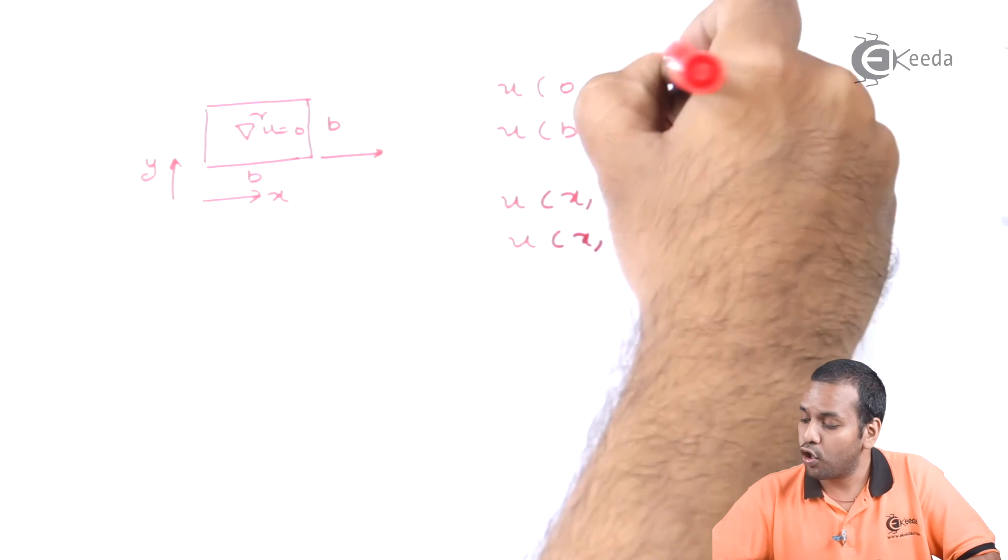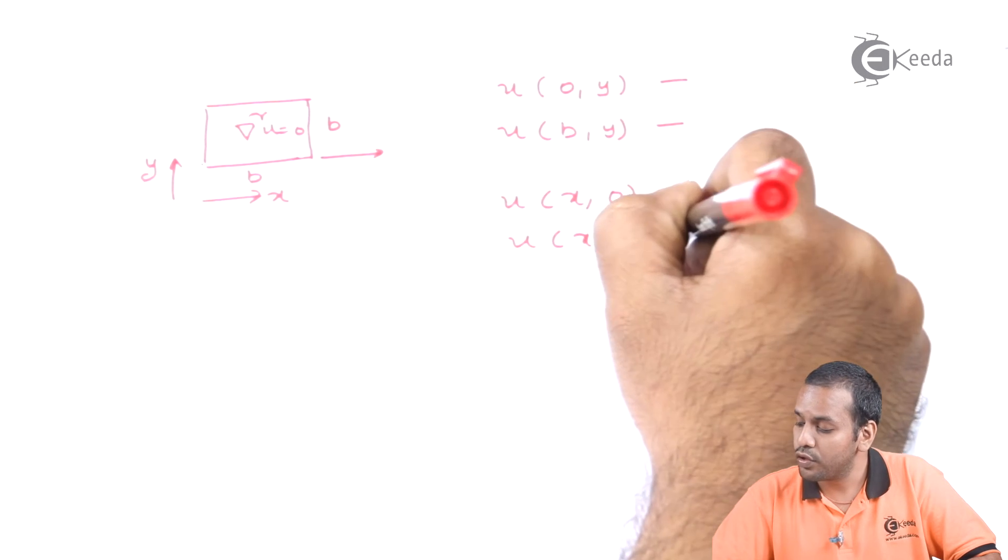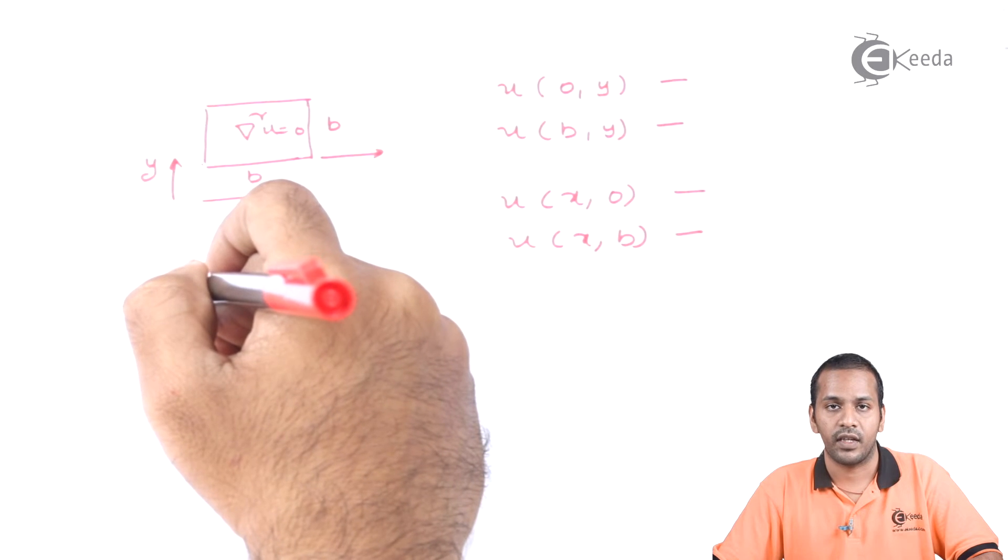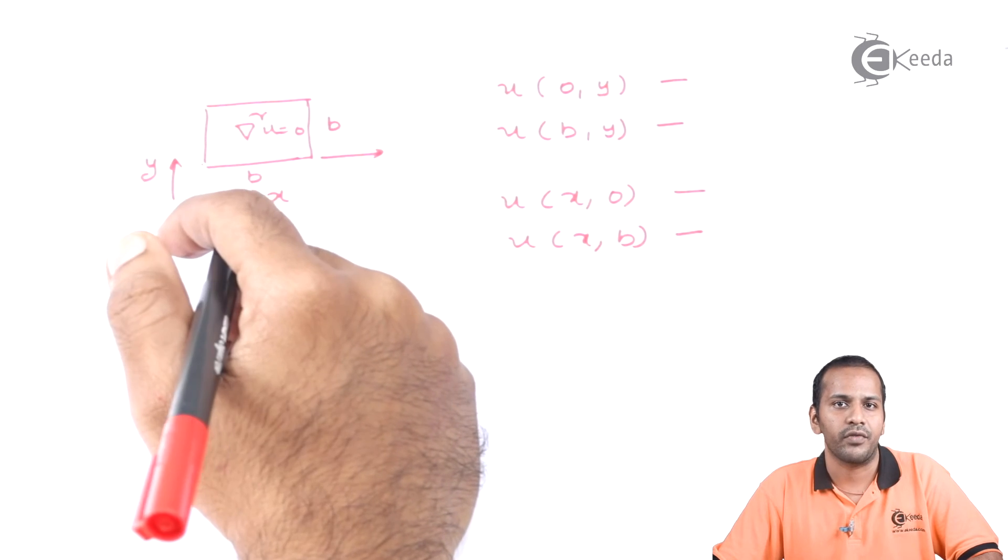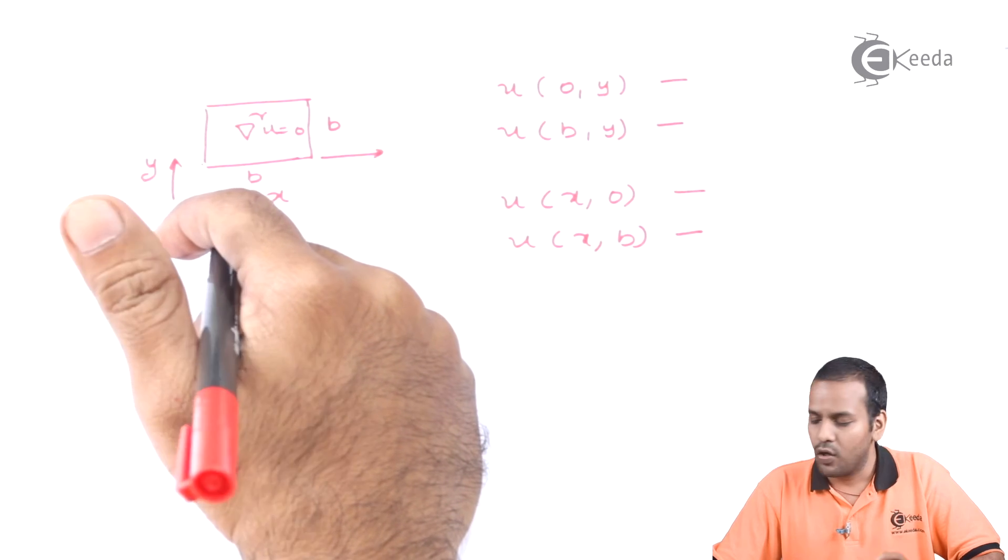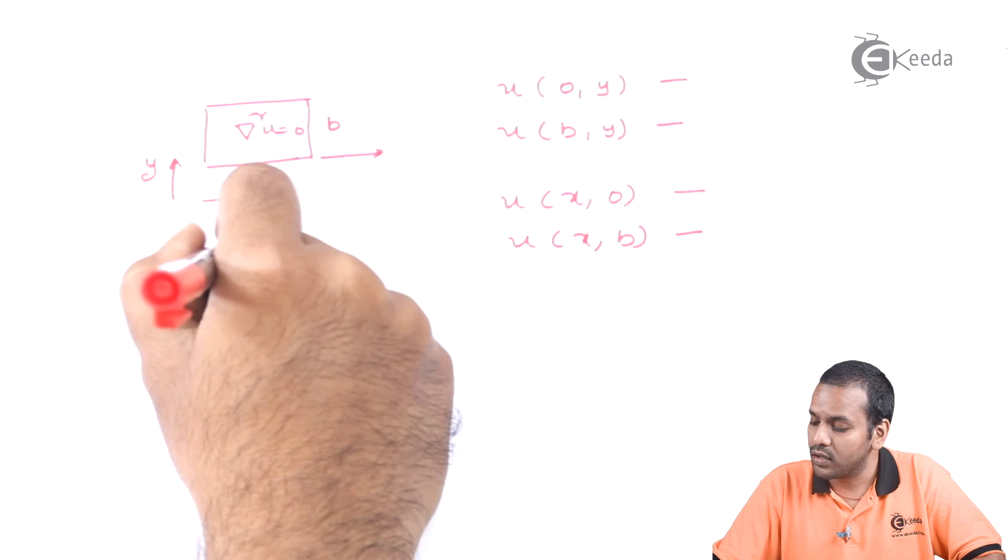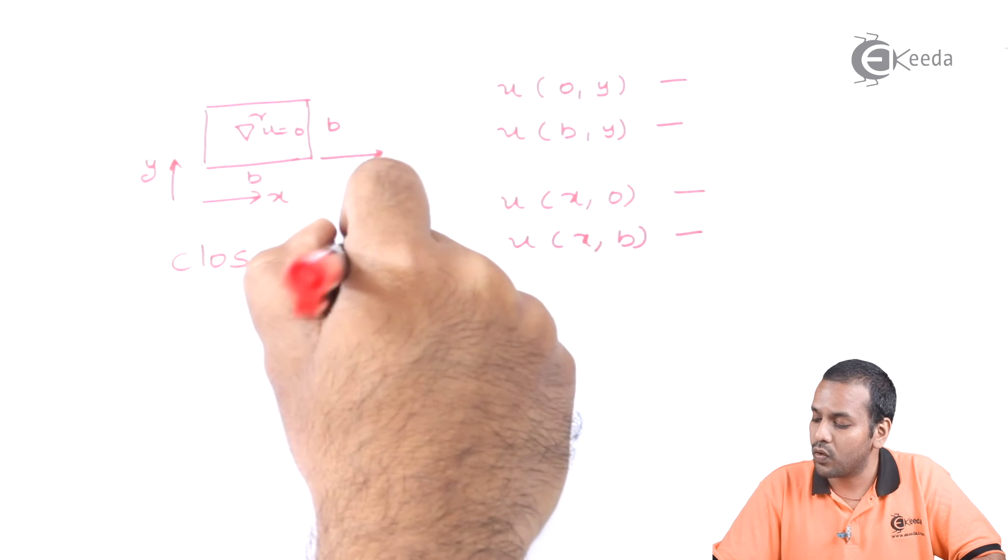I need to define my value at all these four positions. Only then I can solve my Laplace equation. So this is a closed domain.